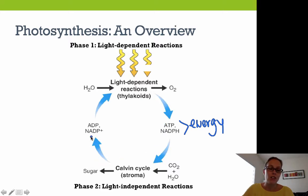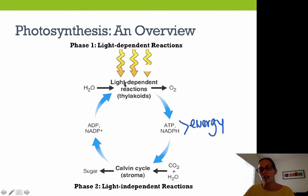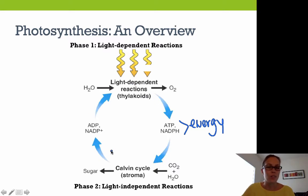When that energy is used, we get ADP and NADP+, and then we go back to the light-dependent reactions. This is a cycle, and it's a basic overview of the different phases of photosynthesis.